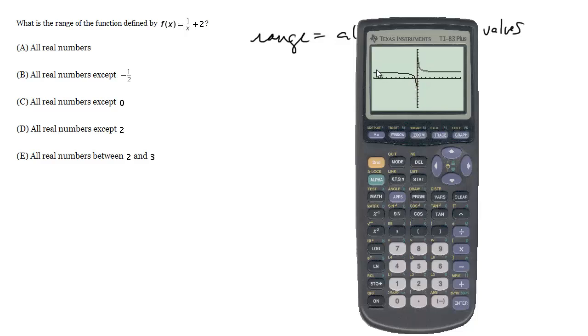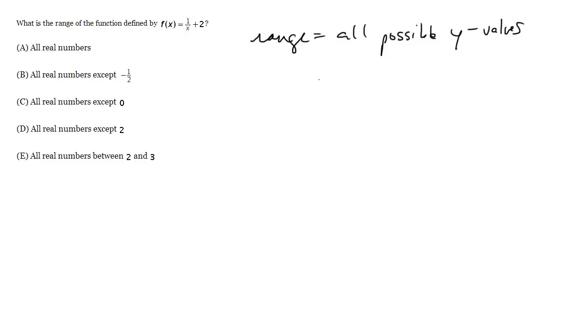But notice there's a horizontal asymptote here. This is leveling off at some particular y value. And if we zoom in, we see that it's leveling off at about y equals 2. So it will never attain the value of y equals 2. So the range is going to be all real numbers except for 2. And that is choice D.